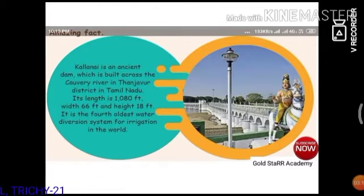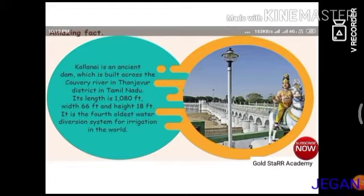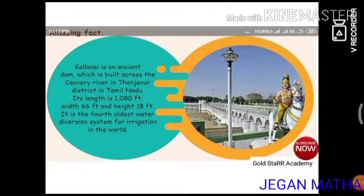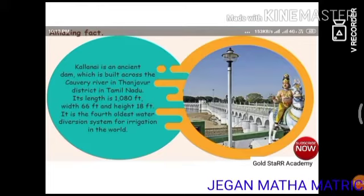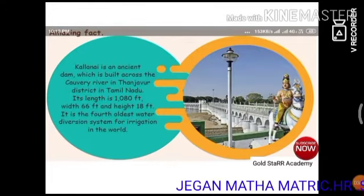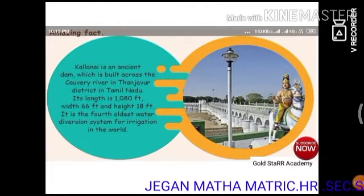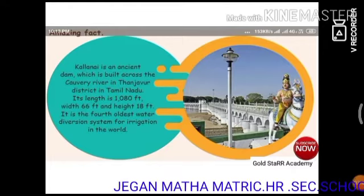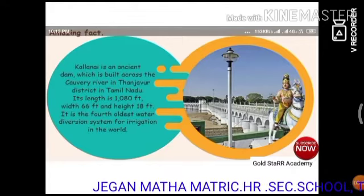Amazing fact — Kalanai. Kalanai is an ancient dam which is built across the Kaveri river in Thanjavur district in Tamil Nadu. Its length is 1080 feet, width 66 feet, and height 18 feet. It is the fourth oldest water diversion system for irrigation in the world.